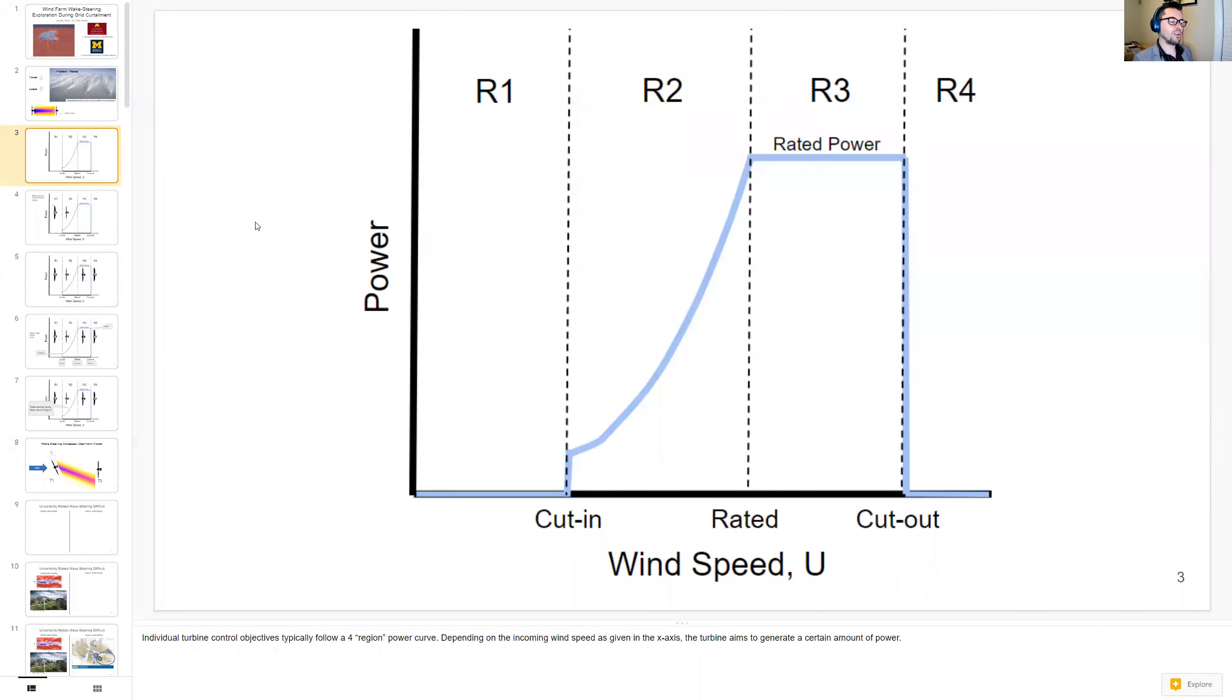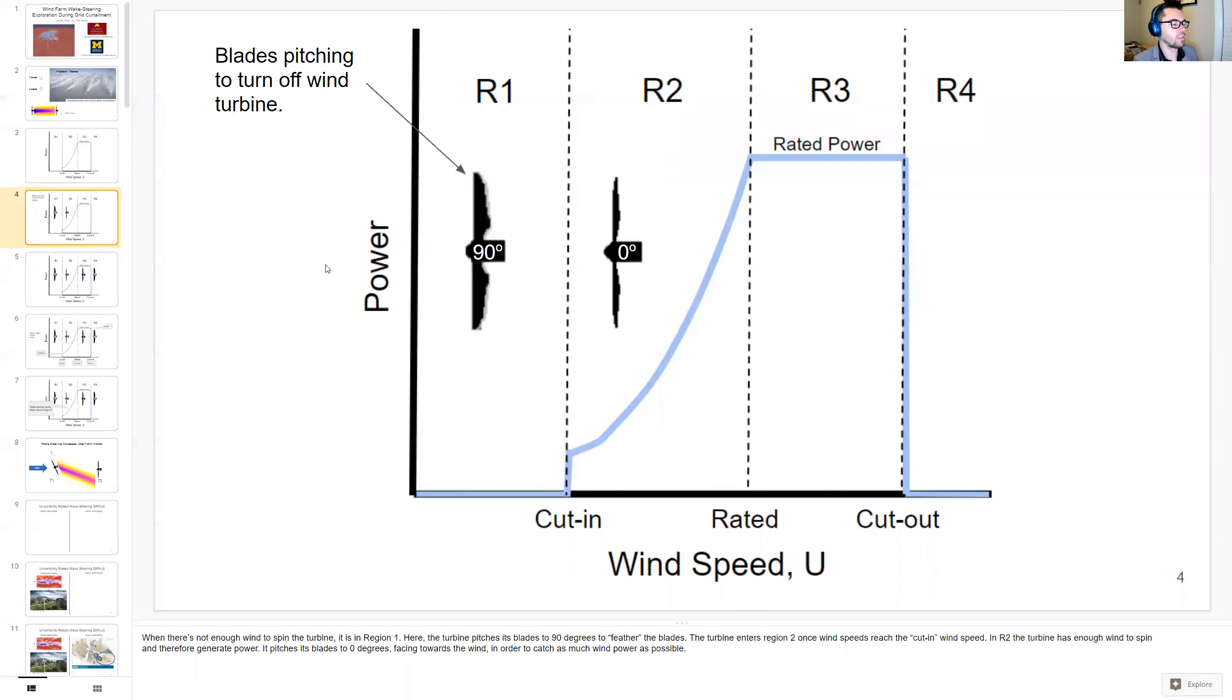Individual turbine control objectives typically follow a four-region power curve. Depending on the incoming wind speed as given on the x-axis, the turbine aims to generate a certain amount of power as given on the y-axis. When there's not enough wind to spin the turbine, it is in region 1. Here the turbine pitches its blades to 90 degrees to feather the blades.